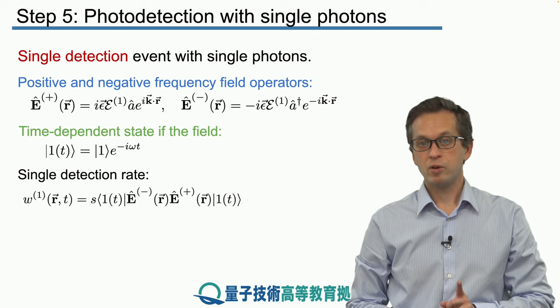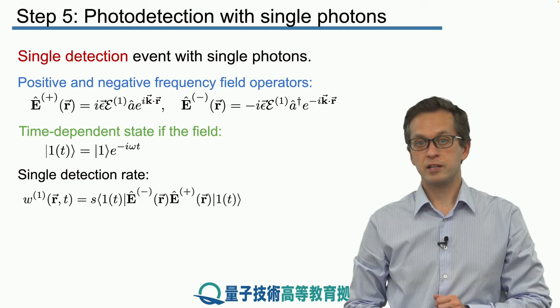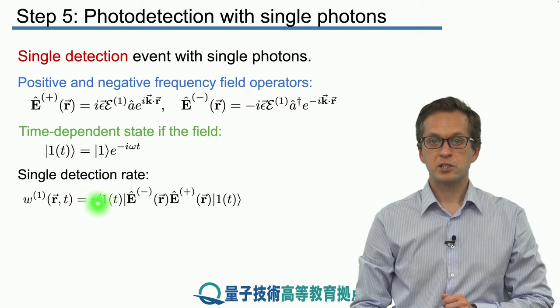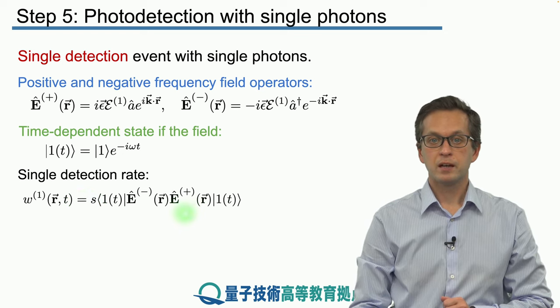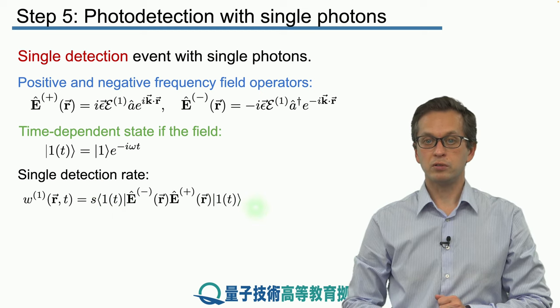So now we want to compute our photo detection rate of a single detection event. And that's given by s times the average of the E-minus times E-plus operator, averaged with respect to our time-evolved single photon field.